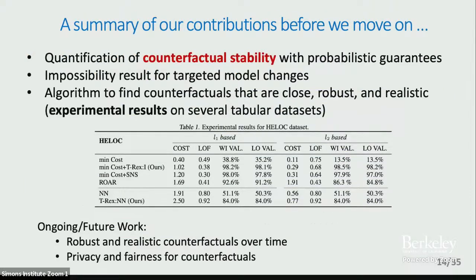With this algorithm, we also have several experimental results. To summarize: we propose a quantification of counterfactual stability with probabilistic guarantees. We also have some impossibility results for targeted model changes — with high probability among naturally occurring model changes, you will be reliable, but you cannot prevent deliberately constructed targeted model changes for which you might fail. Our algorithm finds counterfactuals that are close, robust, and realistic, with results on many tabular datasets, and it outperforms some minimax optimization-type approaches. Ongoing problems include making counterfactuals robust and realistic over time for time-evolving models, and also privacy and fairness problems for counterfactuals.